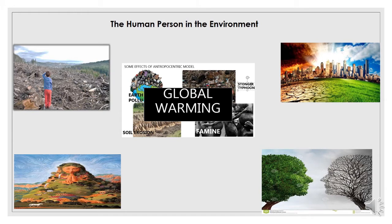In our previous lesson on the second segment, found in Human Person in the Environment, Lesson 1, entitled The Approaches and Understanding Relationship of the Human Person with the Environment, you learned the major philosophical views regarding the person's relationship with nature — including anthropocentrism, biocentrism, and ecocentrism.